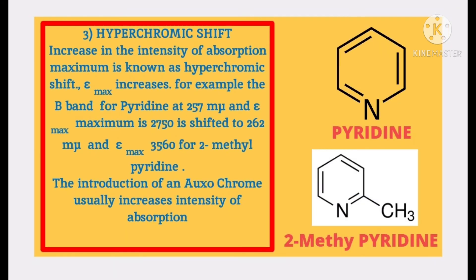Hyperchromic shift: an increase in the intensity of absorption maximum is known as hyperchromic shift. Here epsilon maximum increases.